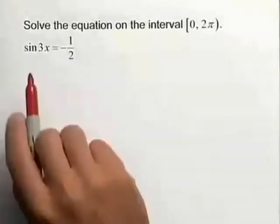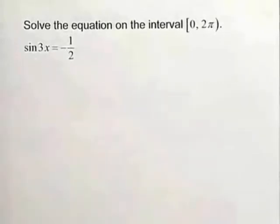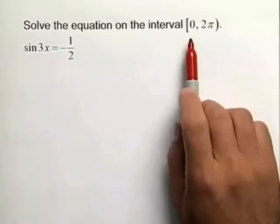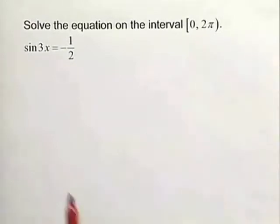Let's solve the following trigonometric equation. We're given the sine of 3x is equal to negative 1 half. We want to find the x values in the interval from 0 to 2π that make the left-hand side equal to negative 1 half.